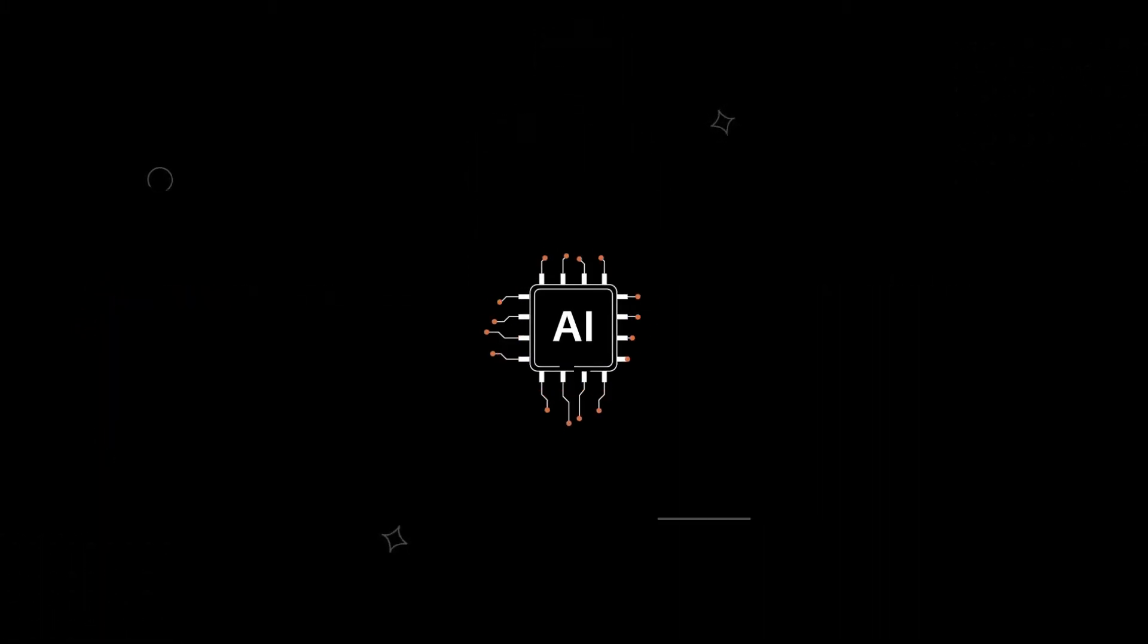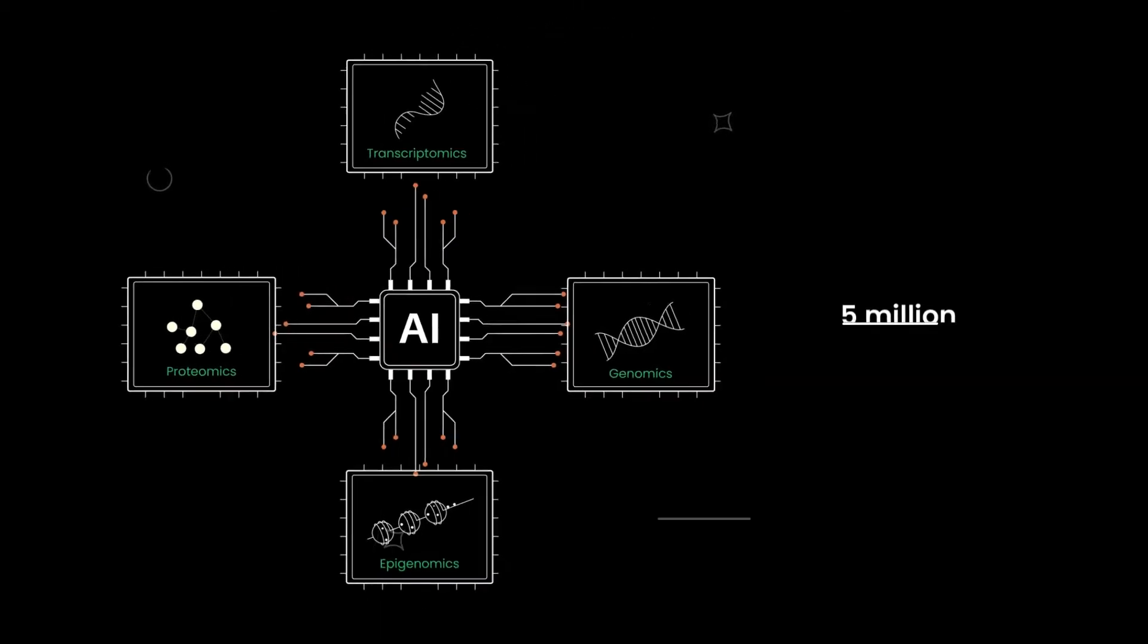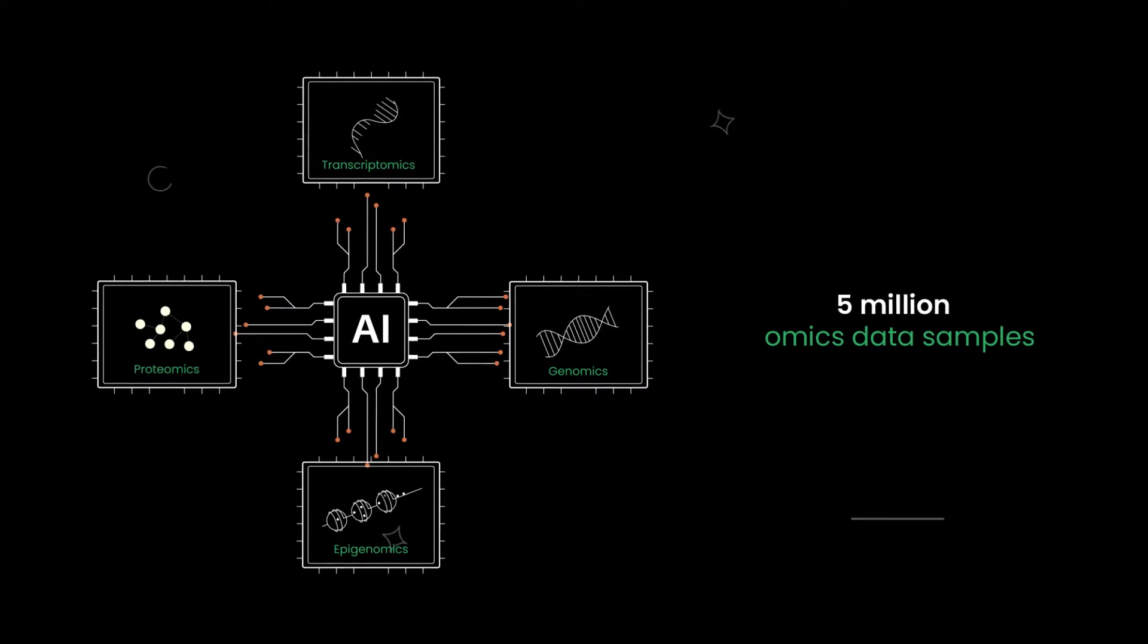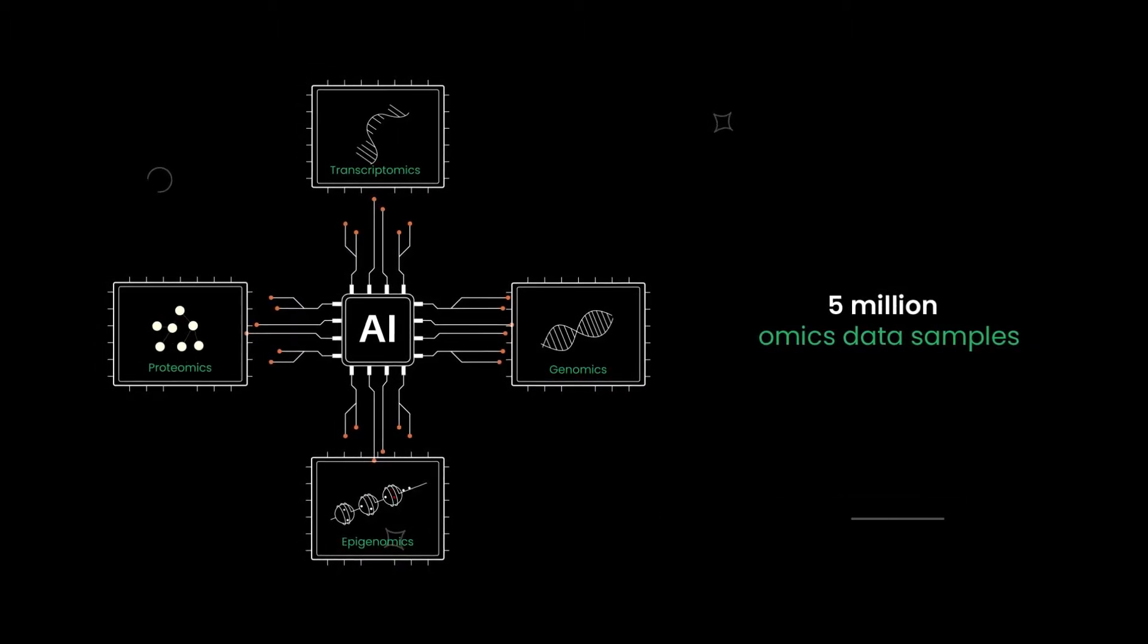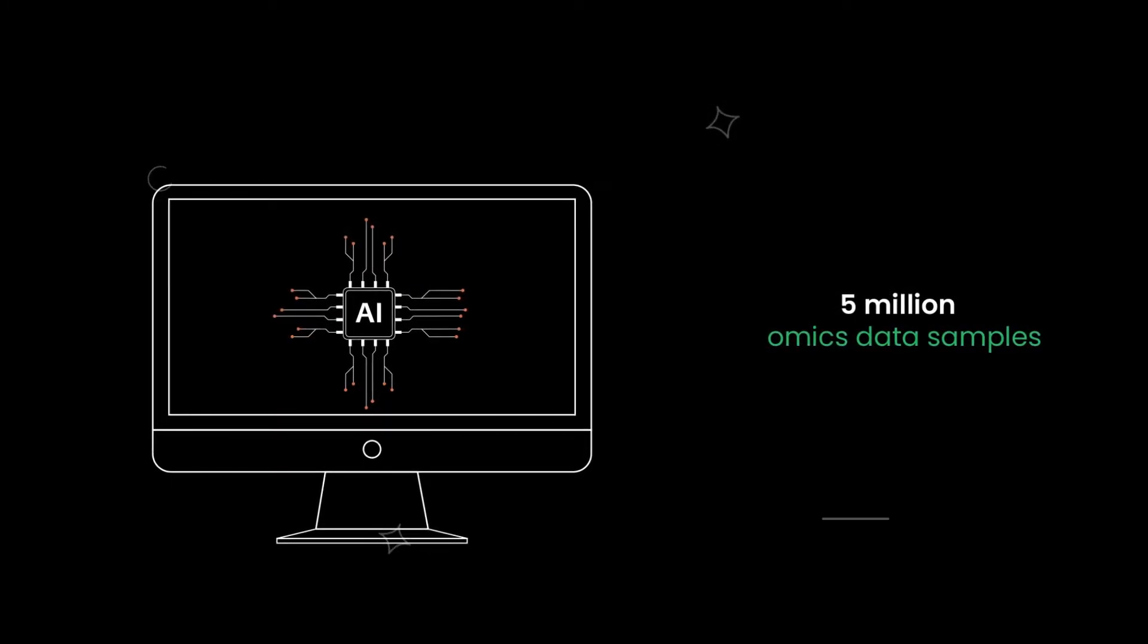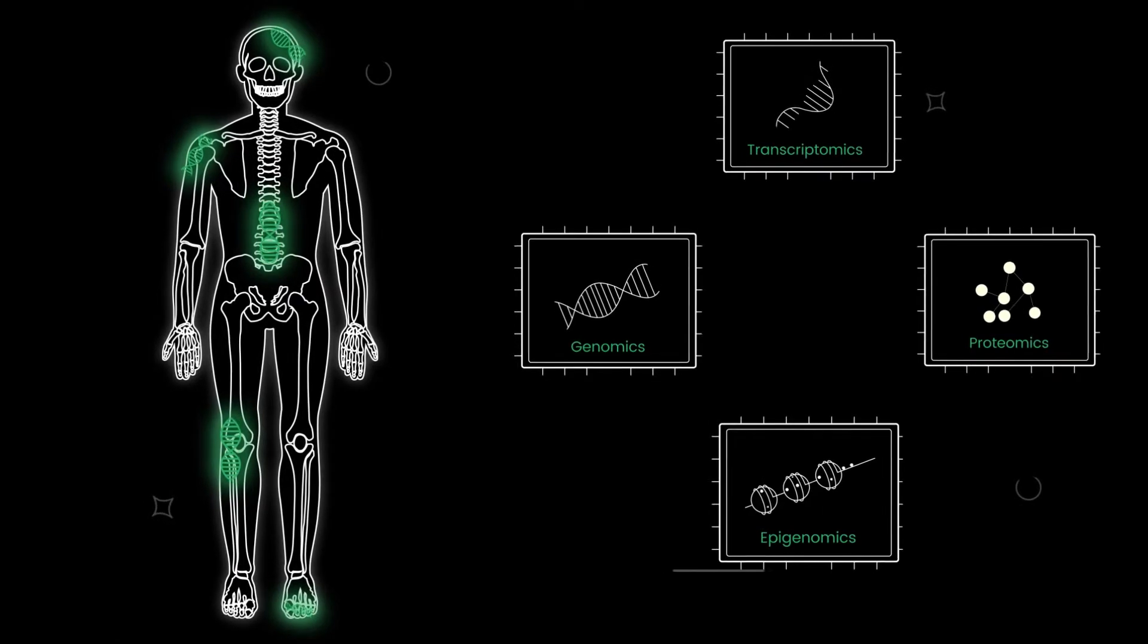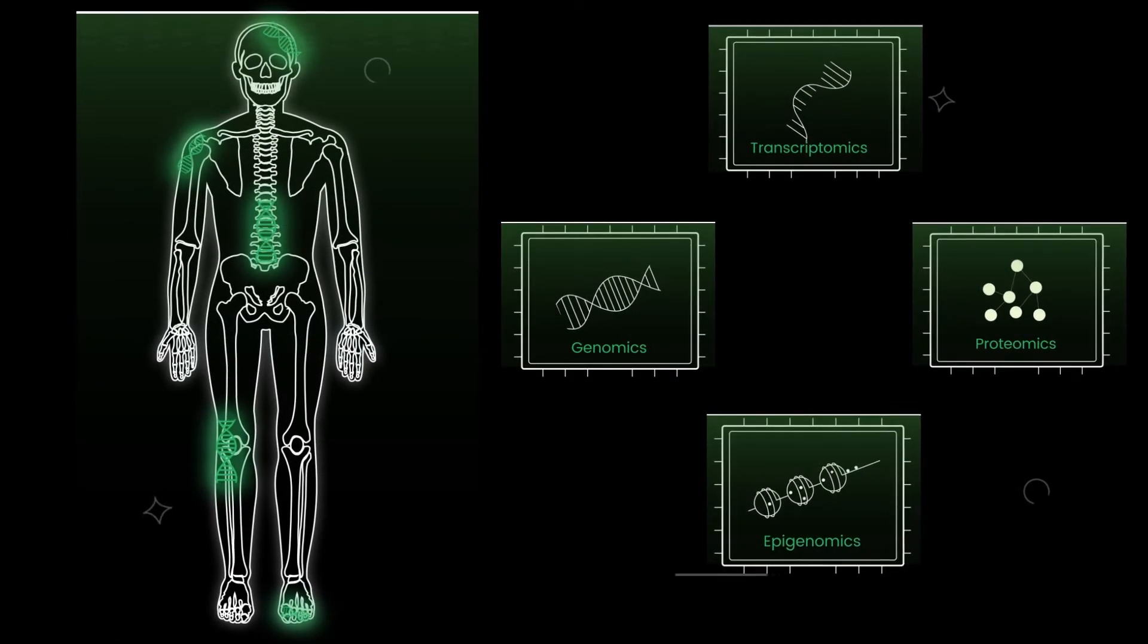The platform draws on trillions of data points including omics data samples, compounds and biologics, patents, grants, clinical trials and publications. The AI algorithm analyzes the data and relevant genes and identifies a number of likely new drug targets.